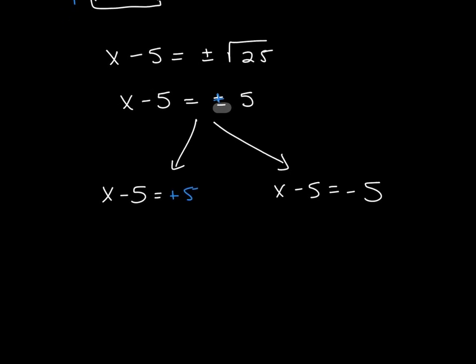So, to solve this one, I add 5 to both sides and I get x is equal to 10. And over here, I also add 5 to both sides. And I know this is weird, but x is just equal to 0. So my two answers are 10 and 0.